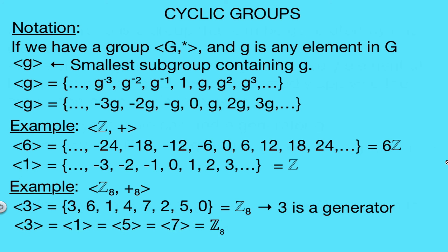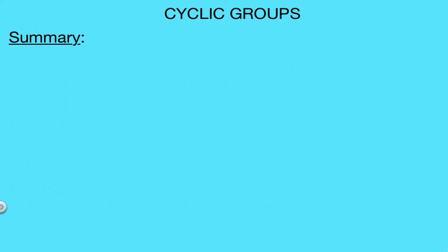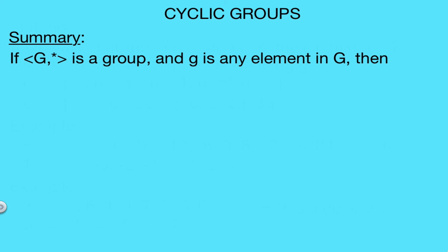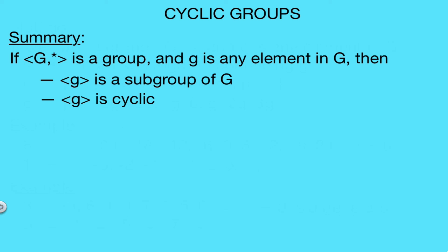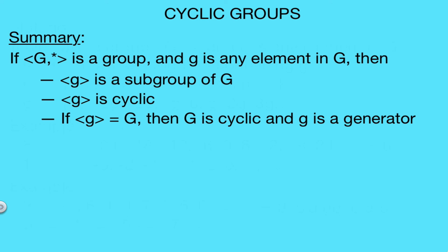To summarize: if we have a group G, and we take any element little g from this group, then ⟨g⟩ represents a cyclic subgroup of G generated by the element g. If this cyclic subgroup generated by g equals the entire group G, then the group is cyclic and g is a generator for our group. Remember that the generator does not have to be unique — we can have multiple elements that generate the group.